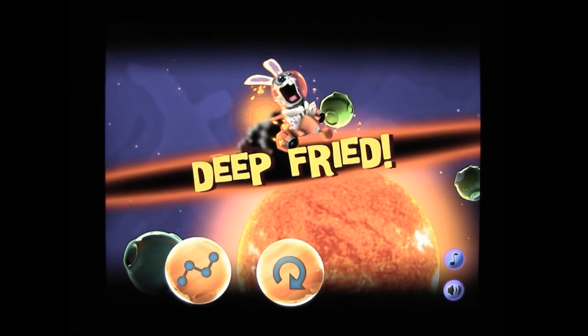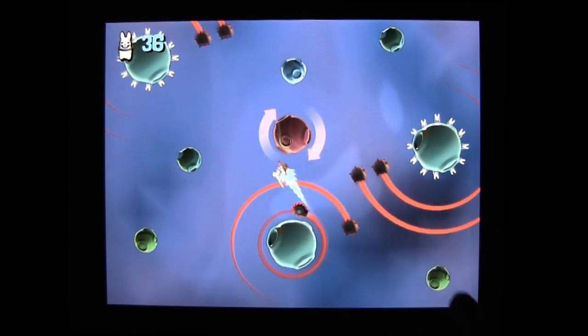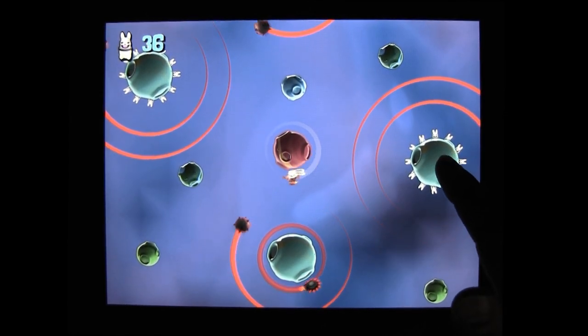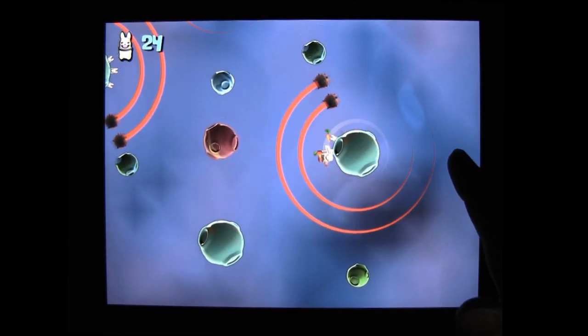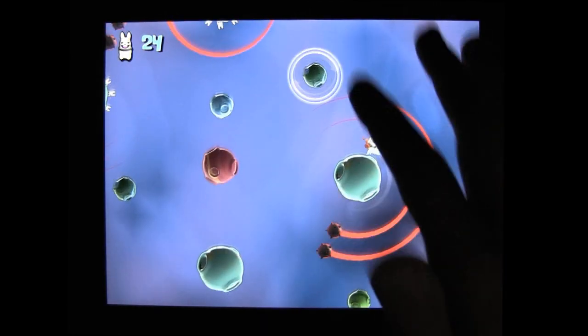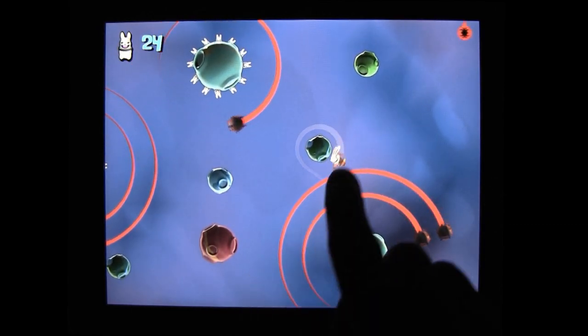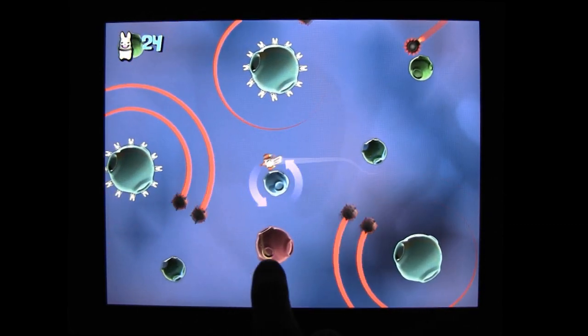You play Rocket Bunnies with a fantastic one-touch control scheme. Your bunny automatically orbits around the planetoids, and you guide them from one to another simply by tapping them. Rocket Bunnies is wonderfully simple to play, and the fun comes from figuring out how to reach all the rabbits as quickly as possible.